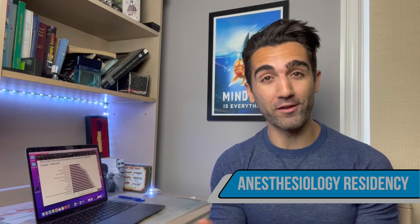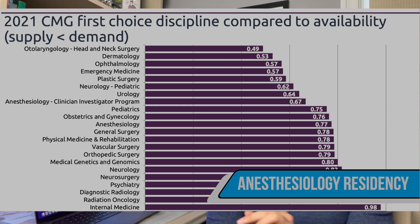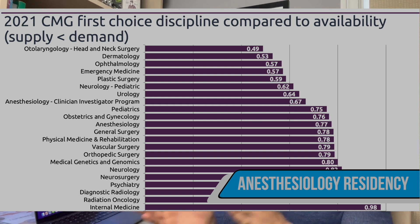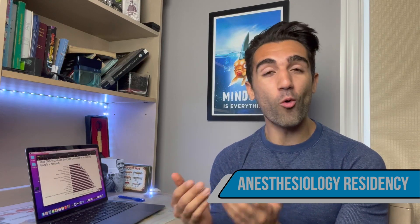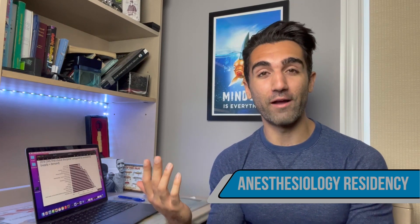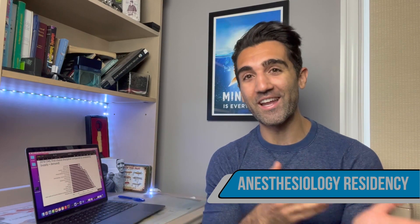The Royal College program is fairly competitive. As of 2021 it is the 11th most difficult specialty to match into in Canada, with an R-value of 0.77, meaning there were more applicants than spaces. By comparison, the Enhanced Skills family medicine two-plus-one match tends to be almost equally competitive — same for emergency medicine. If the five-year program is competitive, the enhanced skills match is almost the same, if not a little bit more competitive.